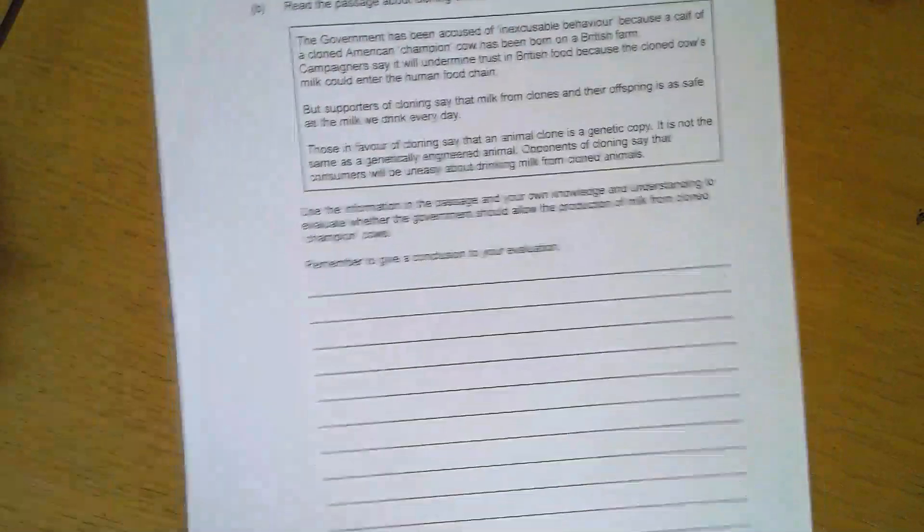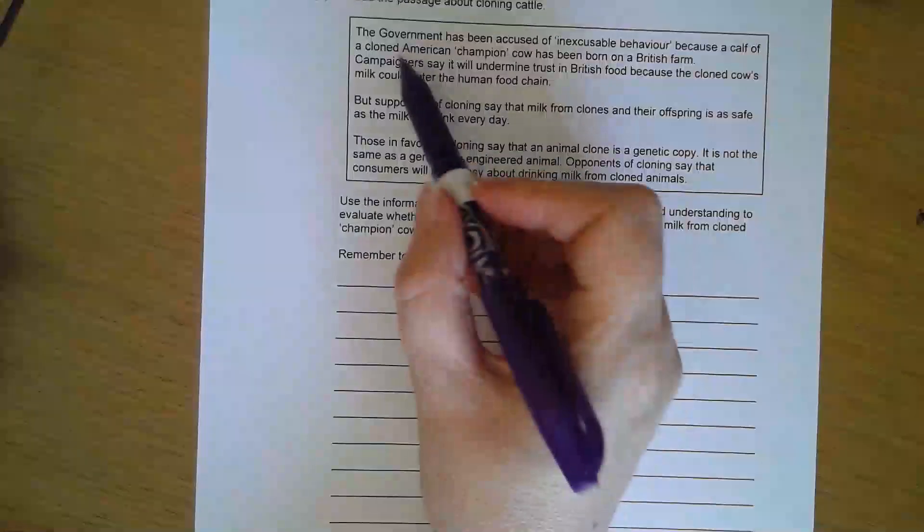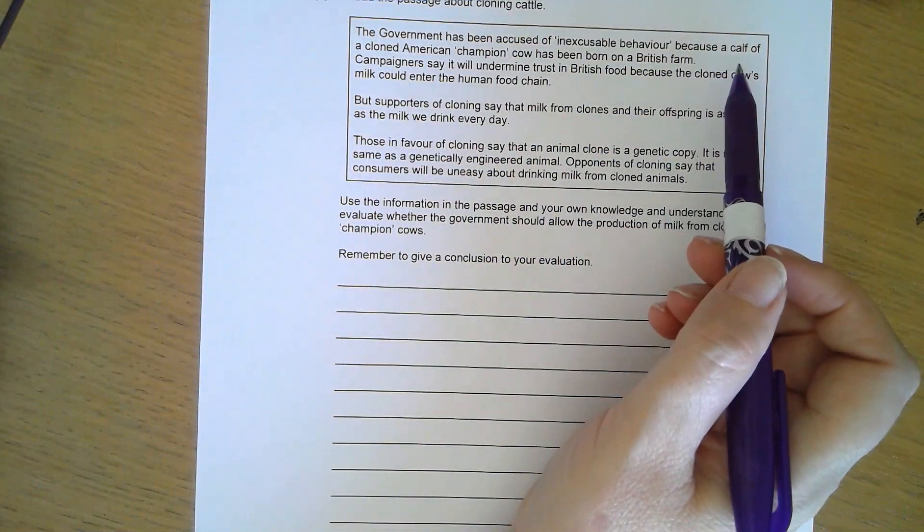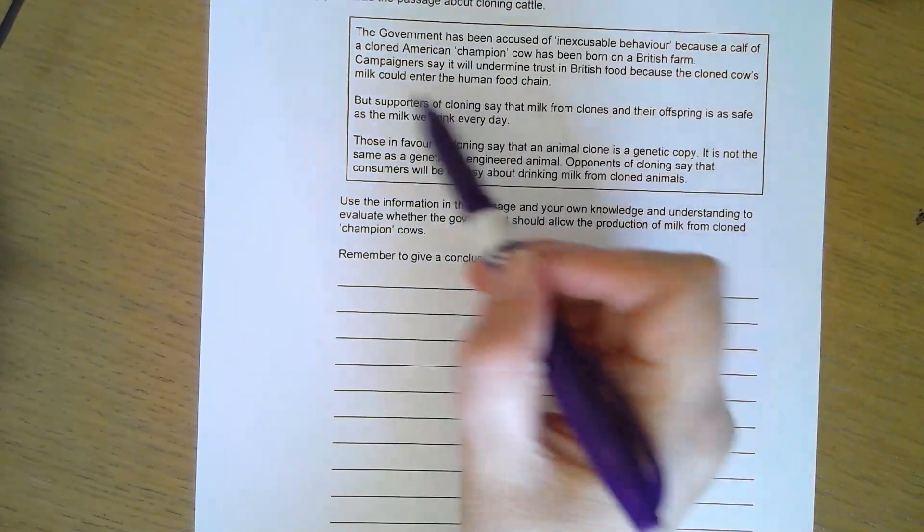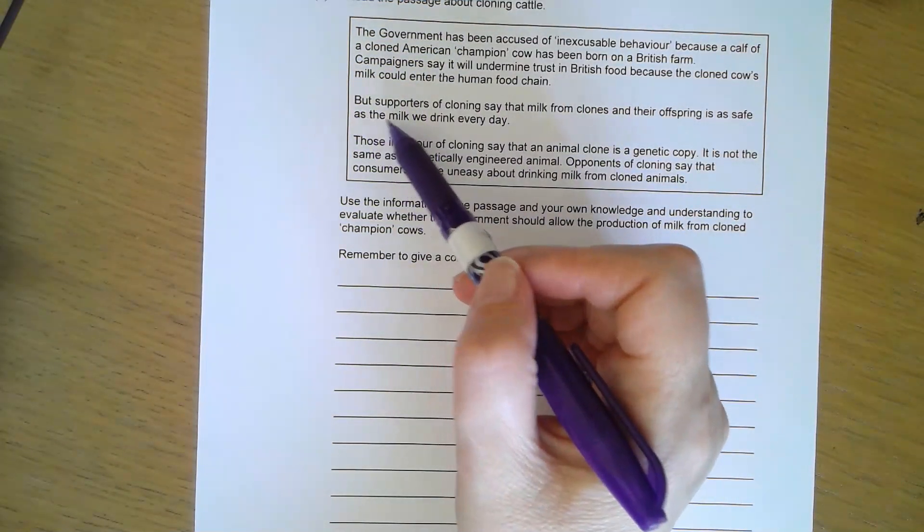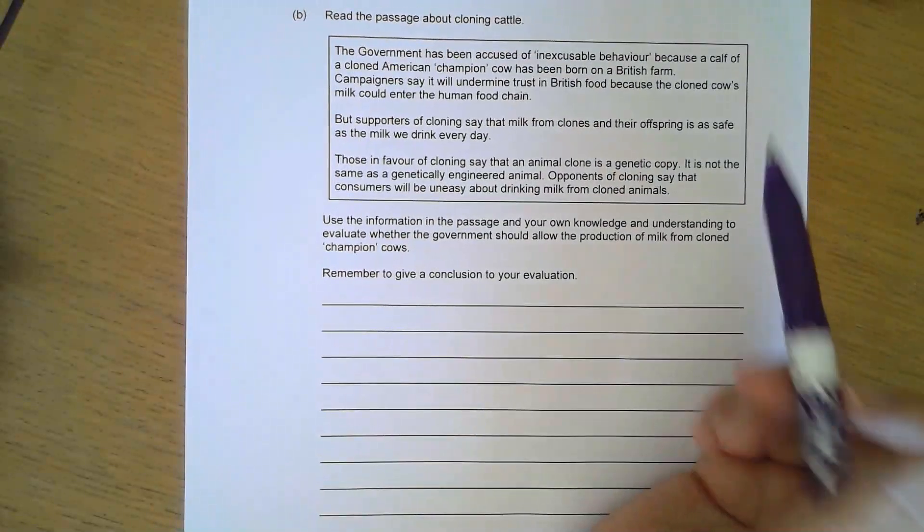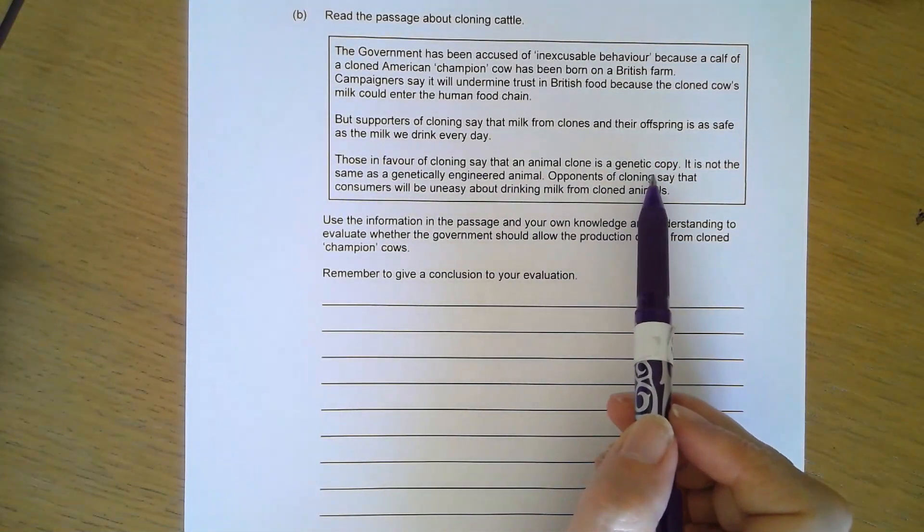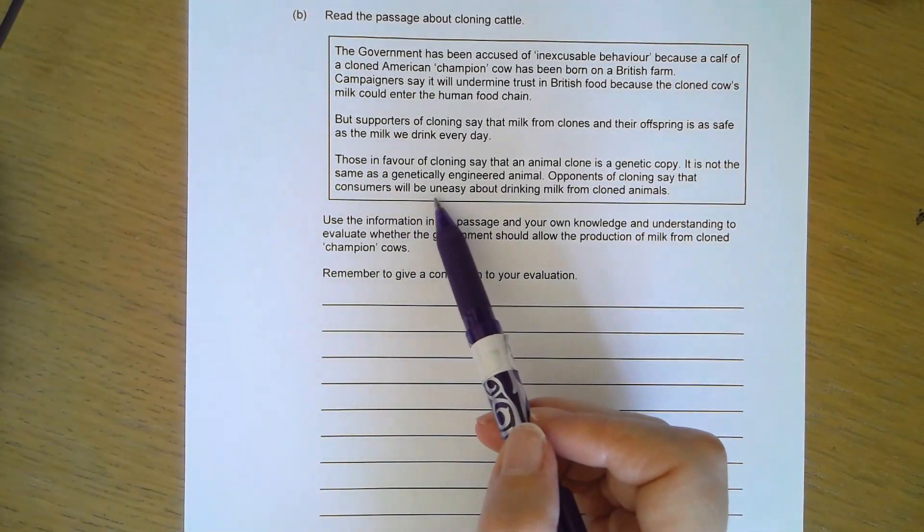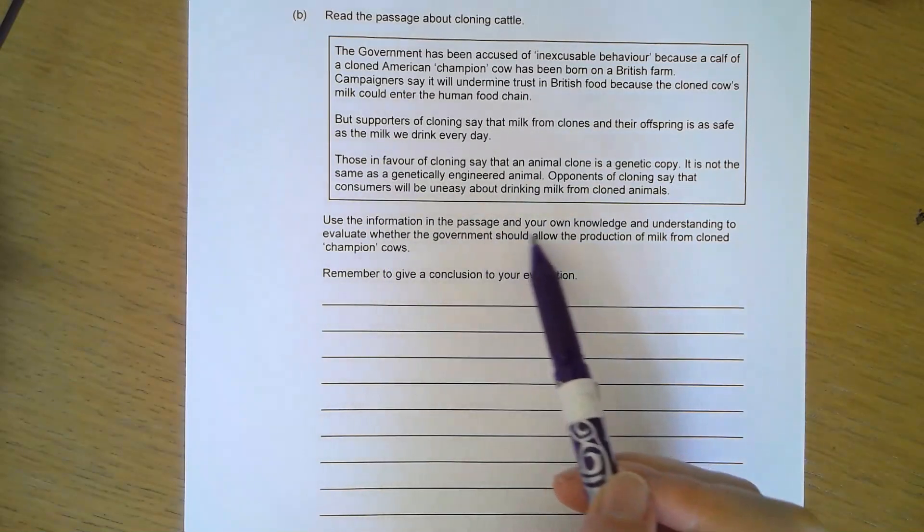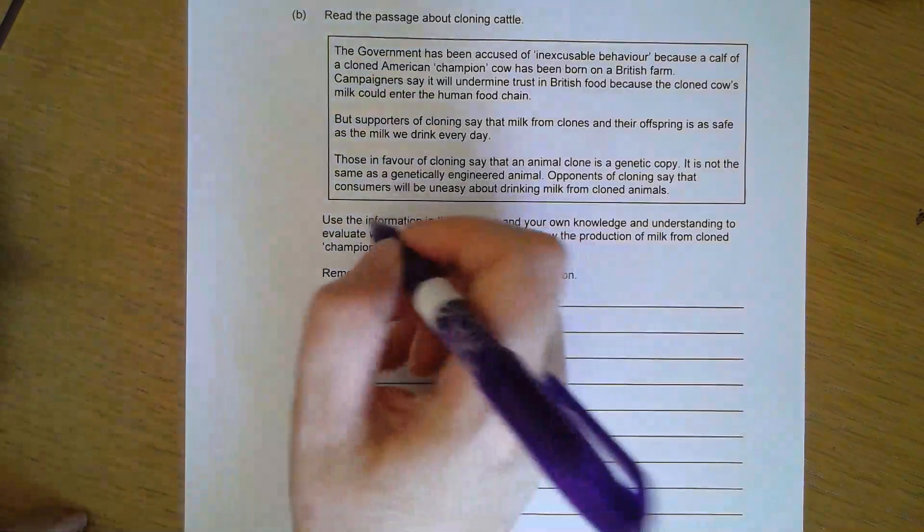Final question. We need to read this passage about cloning cattle. The government's been accused of inexcusable behavior because a calf of a cloned American champion cow has been born on a British farm. Campaigners say it will undermine trust in British food. But supporters say milk from clones or their offspring is safe. Those in favour say a clone is a genetic copy, not the same as a genetically engineered animal. Use the information to evaluate whether the government should allow production of milk from cloned champion cows. Remember to give a conclusion.